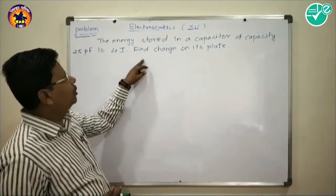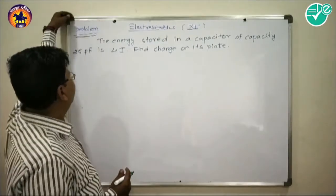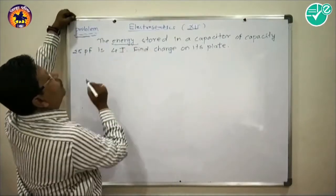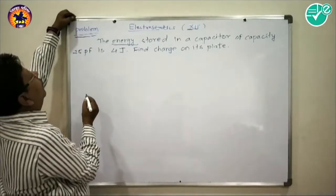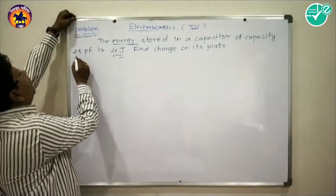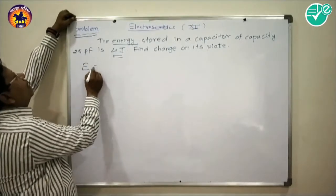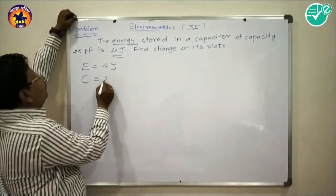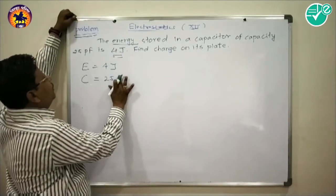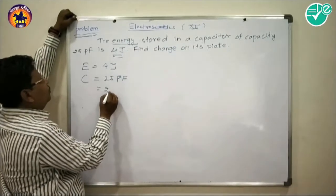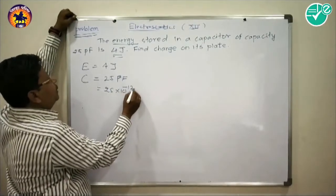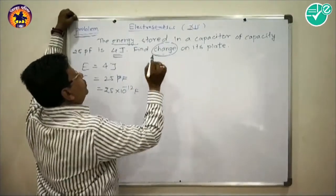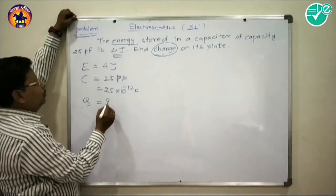Next, problems on energy stored by a charged capacitor. A capacitor of capacity 25 picofarad (25×10⁻¹² F) stores energy equal to 4 joules, and we need to calculate the charge on its plates.